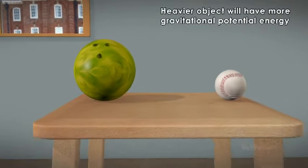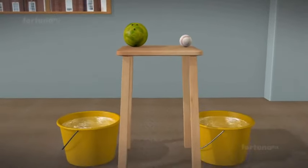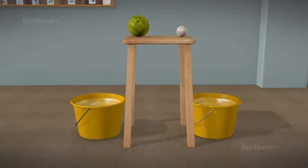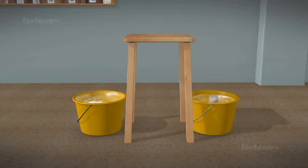A heavier object will have more gravitational potential energy. Consider a large bowling ball and a small baseball that are dropped into identical buckets of water from the same height. The larger ball will cause more water to splash out of the bucket than the smaller baseball.